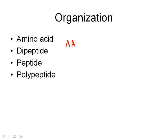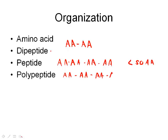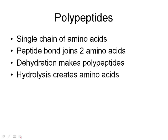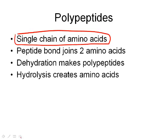In terms of organization: a single molecule is called an amino acid. When one amino acid bonds with another, we call it a dipeptide. When we have multiple amino acids together — fewer than 50 — it's called a peptide. A polypeptide is more than 50 amino acids joined together. The only difference between peptides and polypeptides is their size. A polypeptide is a single chain of amino acids joined by peptide bonds.